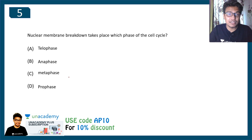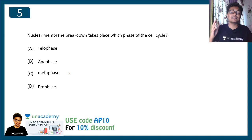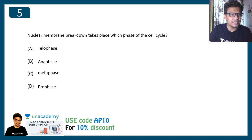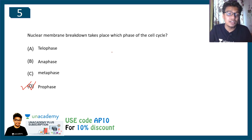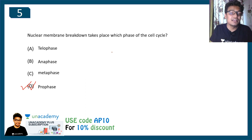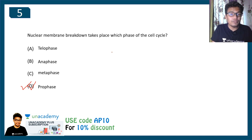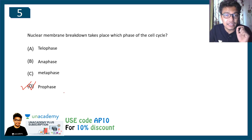Question five: nuclear membrane breakdown takes place at which phase of the cell cycle? This type of question has been asked in several examinations, so it is super important. The answer is prophase. In prophase, the maturation-promoting factor phosphorylates the lamins. Lamins are intermediate filaments that work as a framework upon which the nuclear envelope resides. When the lamin framework breaks down and dissociates, the nuclear envelope breaks down. This is an important concept tested in many examinations.